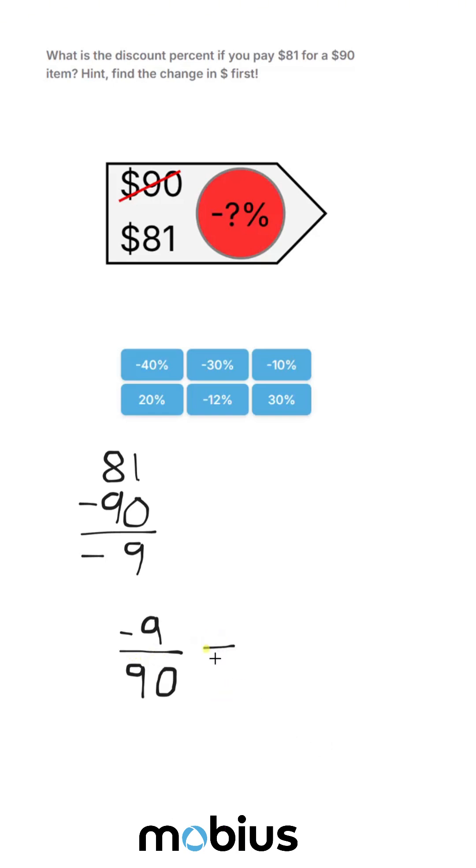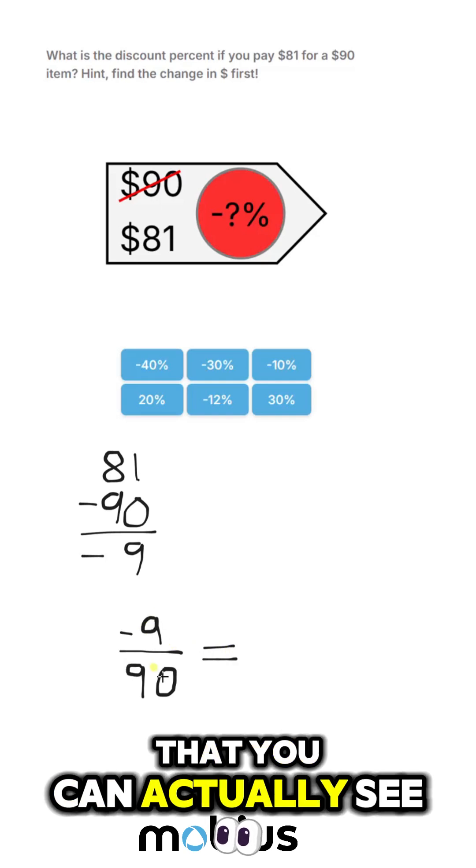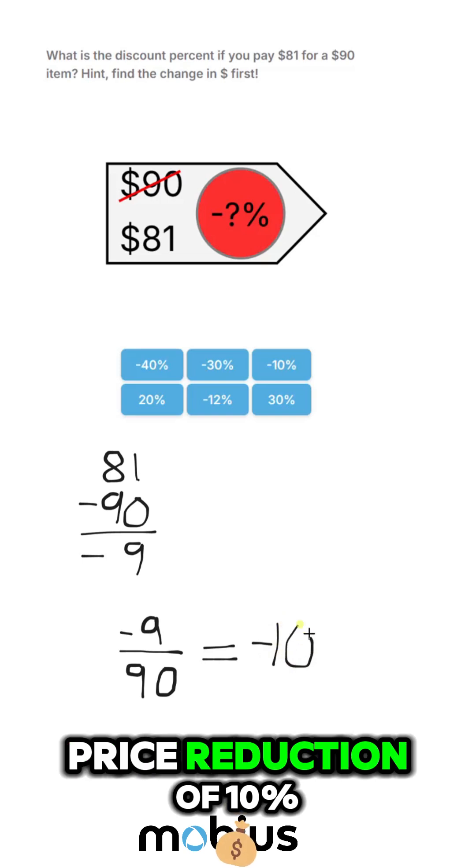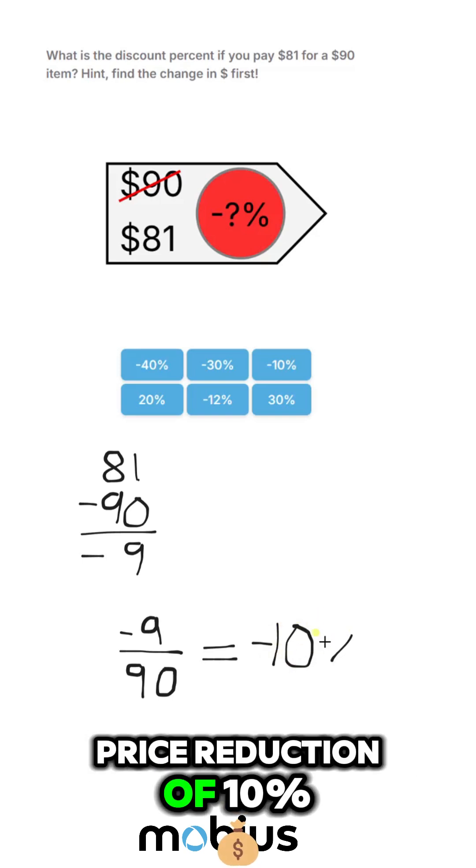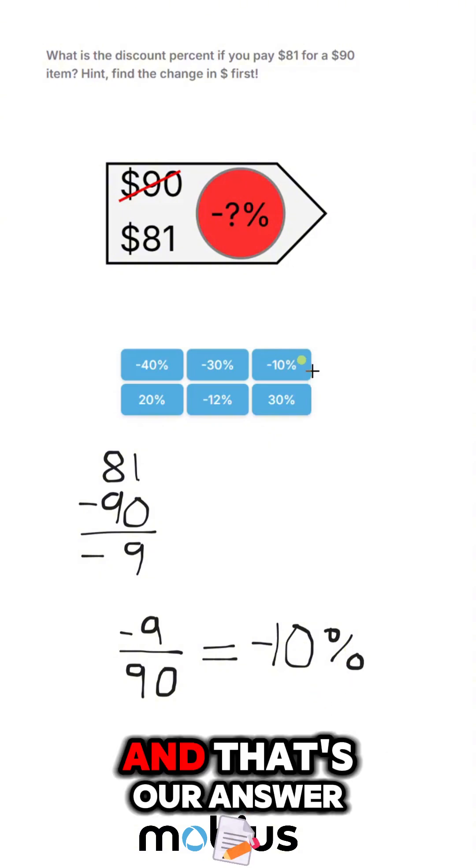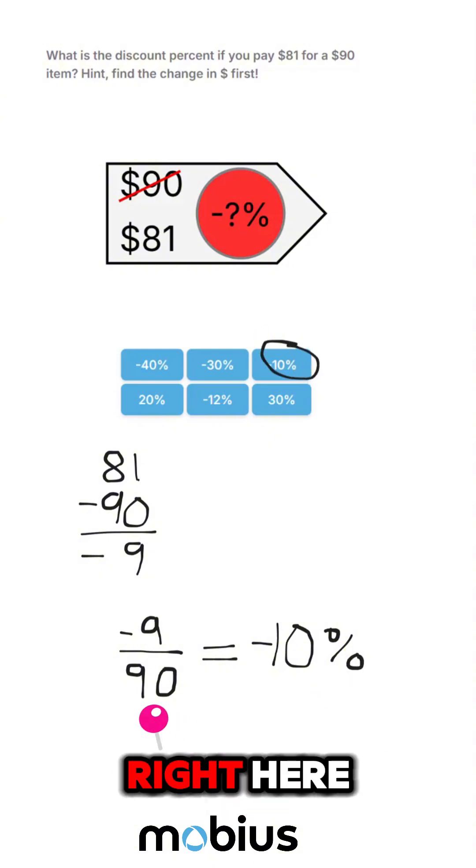of 90—that you can actually see, just remove a 0 here—so that is a price reduction of 10%. 9 over 90 is 0.1, which is a 10% reduction, and that's our answer right here.